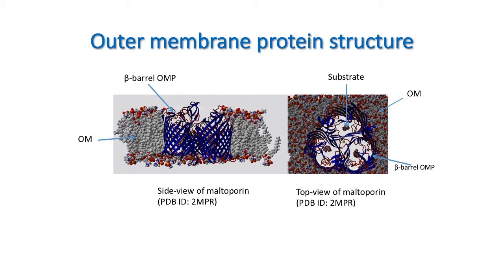All proteins found in the bacterial outer membrane have similar structures. They are composed of beta strands that are connected by loops and turns to form a beta barrel. These beta barrels are embedded in the membrane as visualized in these figures.